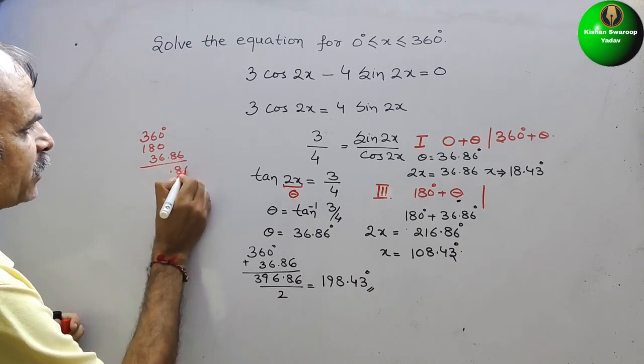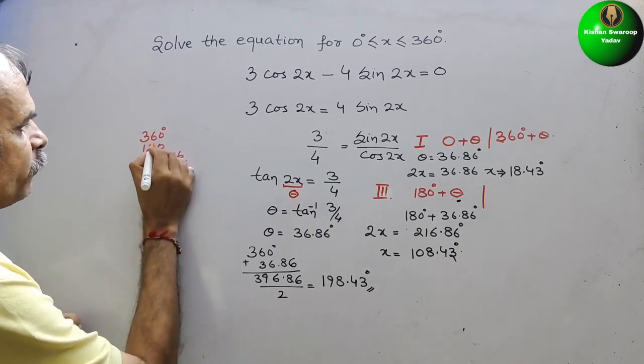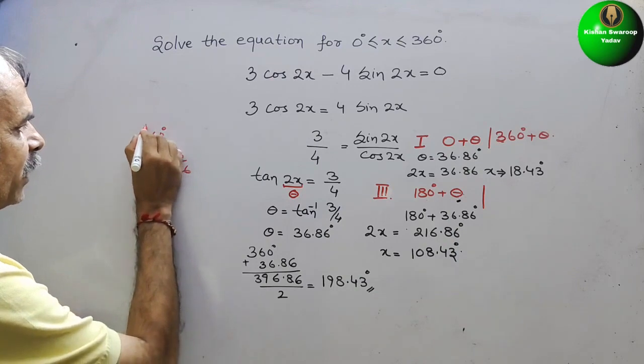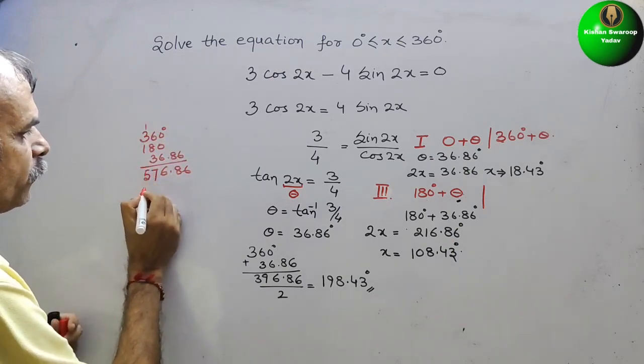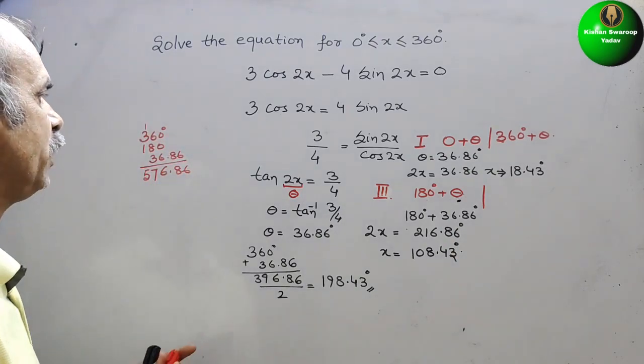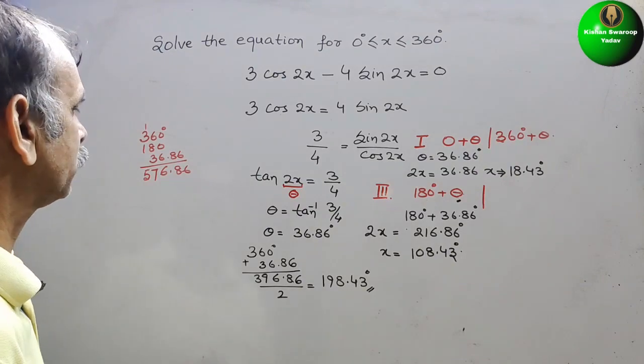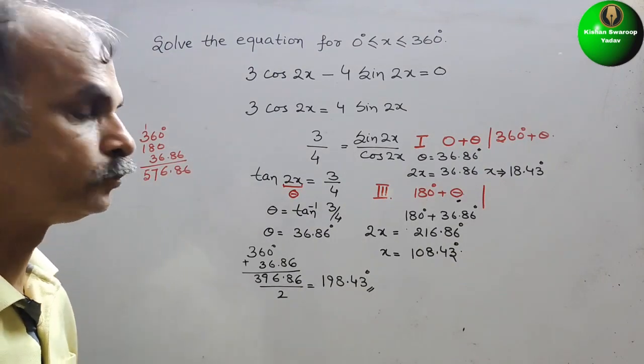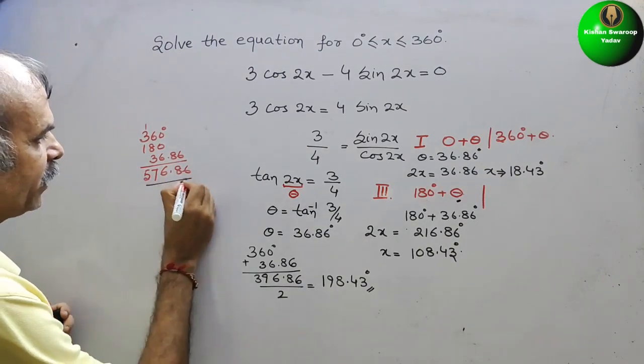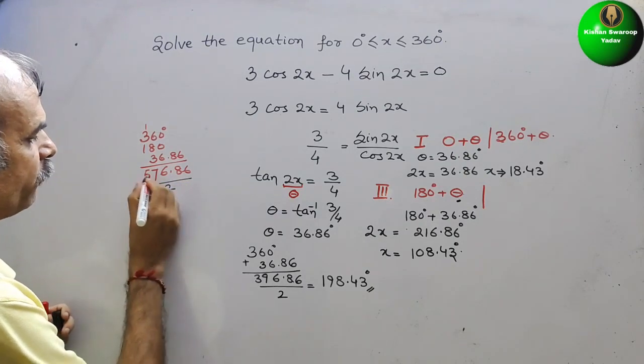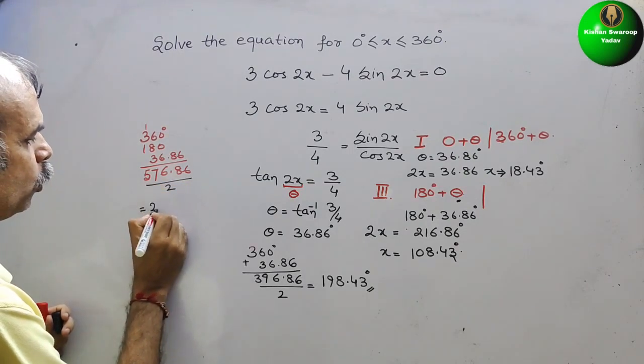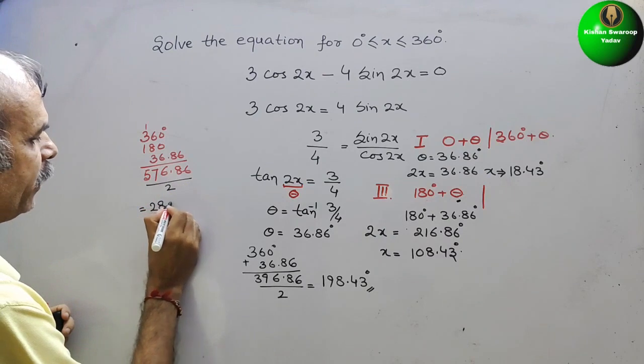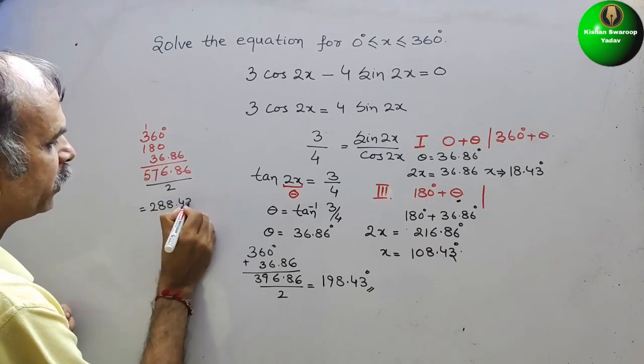That is your 36.86. So we get 576.86. Now we have to divide it by 2. We will get 288.43 degree.